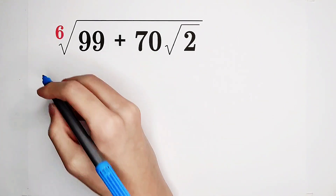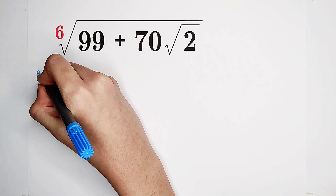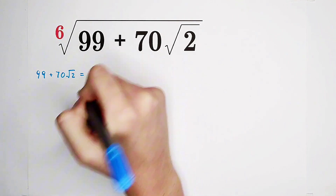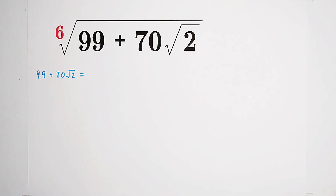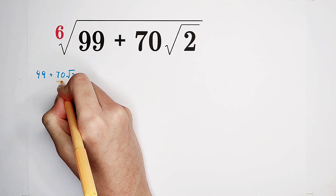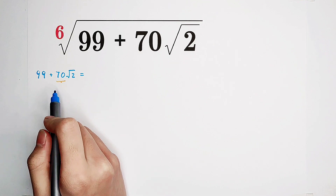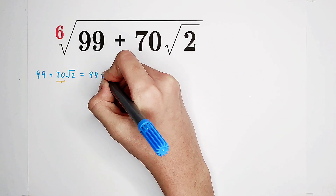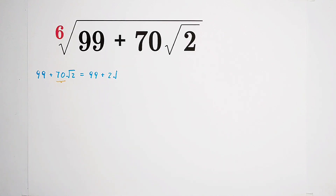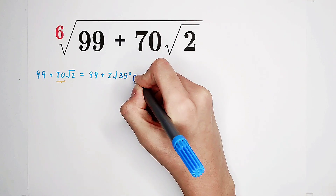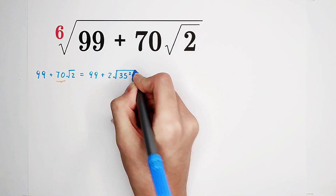So let's do it. Firstly, how to write it as a square term? We have 99 plus 70 times square root of 2. You can see here: 70. Usually, here should be 2. So now, it can be written as 2 times square root of — because 2 times 35 is 70 — so in the square root, it is 35 squared times 2. So this is true.